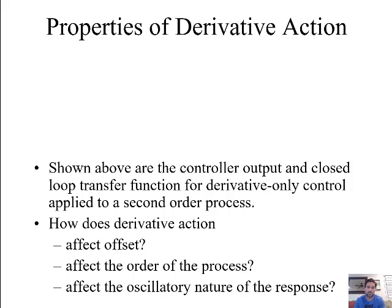Hey everyone, this is part two of our lecture for performance characteristics and applications of PID control, which is chapters seven and eight of Chemical and Bioprocess Control from James Riggs. Last time we talked about the effects of proportional and integral terms on feedback control performance. Today we're going to start by looking at the properties of derivative action, then direct versus reverse acting as a controller setting, and go through examples showing when we might incorporate a different mode of PID control.